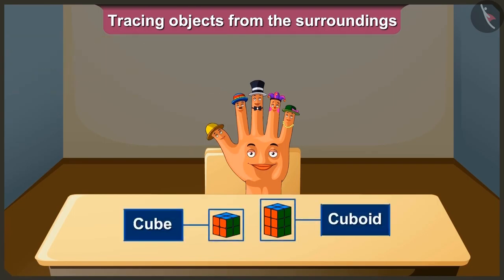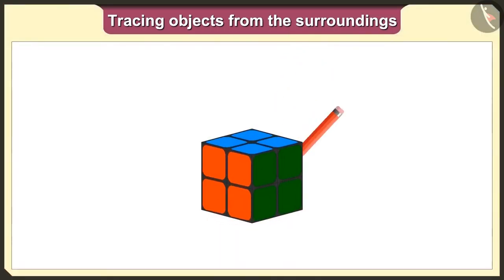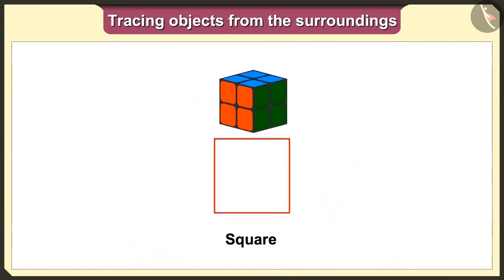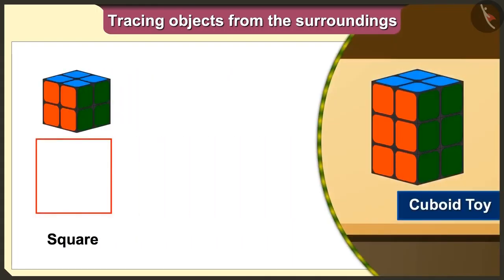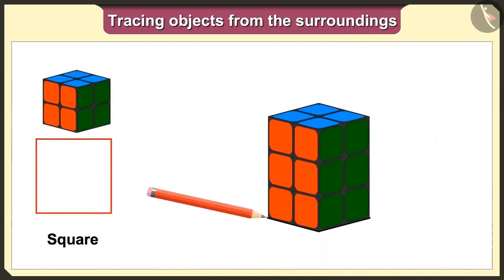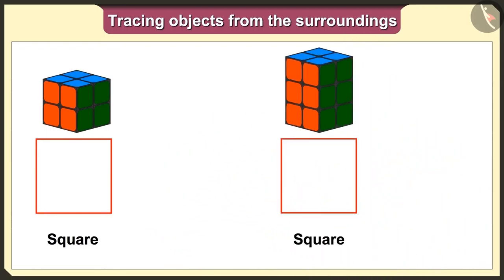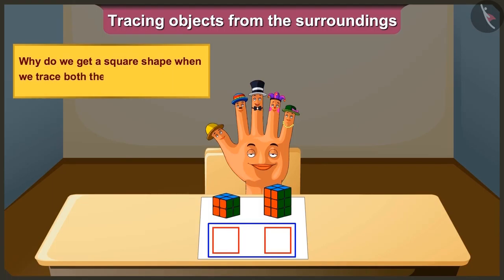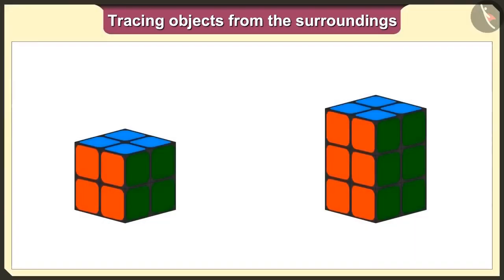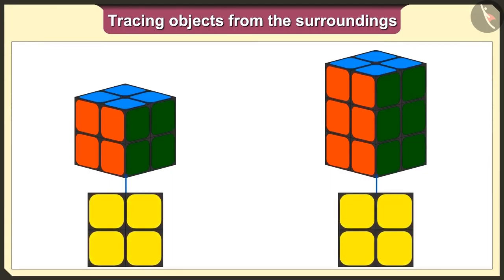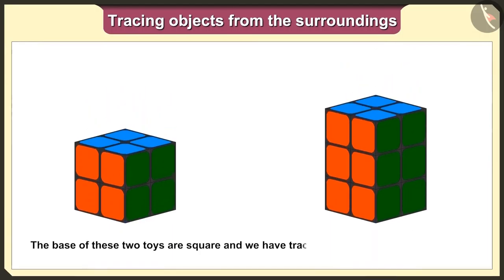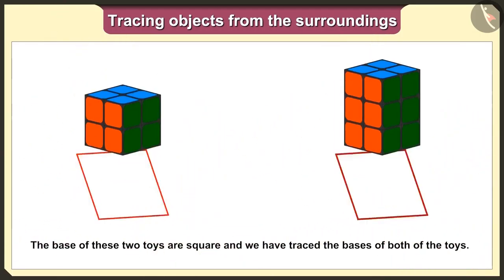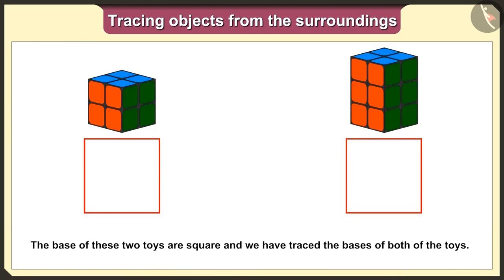Let's keep these toys on a paper and trace them. If we keep this cube toy on paper and trace it, then we will get a square shape like this. And if we keep this cuboid toy on paper and trace it, then also we will get a square shape like this. Why do we get the square shape when we trace both these toys? Because the base of these two toys is square, and we have traced both toys with their base.